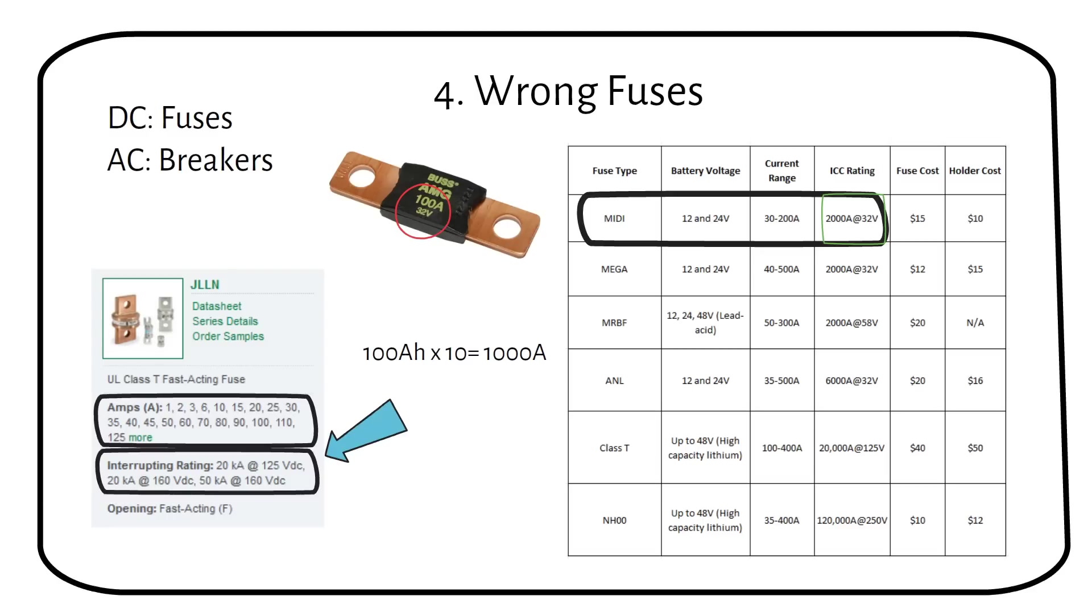For a larger battery such as 48 volt 400 amp hour lithium battery, which can deliver a short circuit current of 4000 amps, midi, mega, MRBF or ANL fuses are insufficient. Instead, you will need a class T or NH00 fuse, which can handle both the higher voltage and a higher short circuit current.